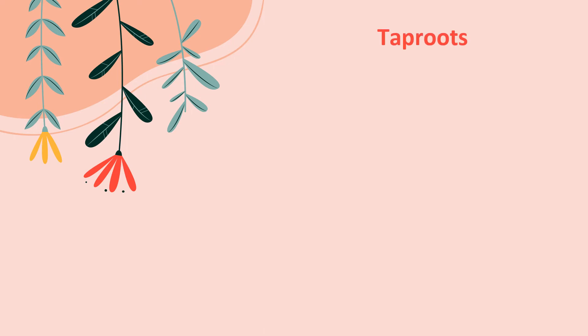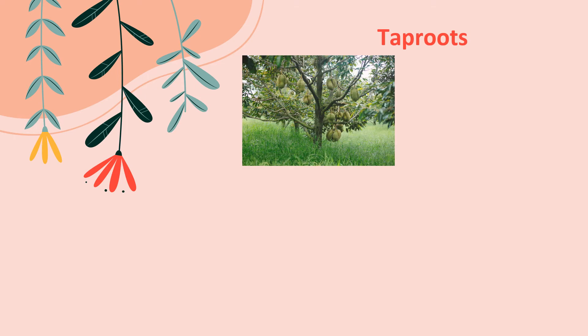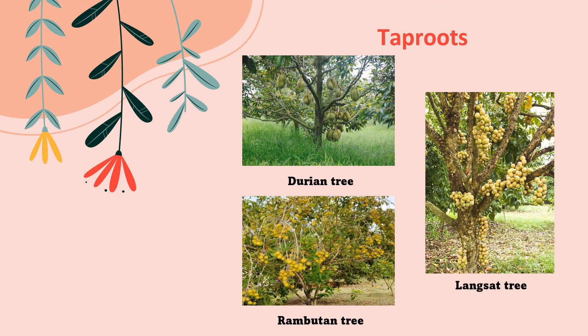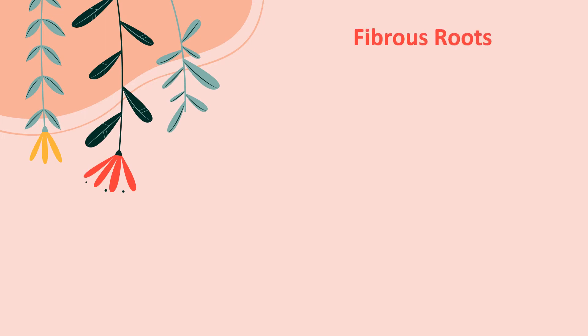Next, let us look at examples of plants with tap roots: durian tree, rambutan tree, and langsat tree. And last but not least, let us look at examples of plants with fibrous roots.